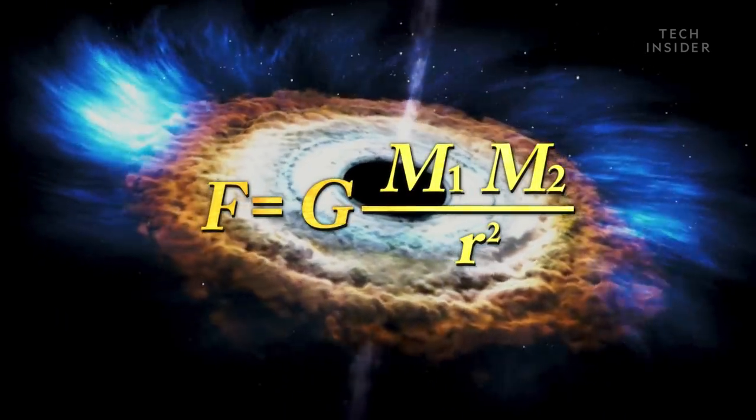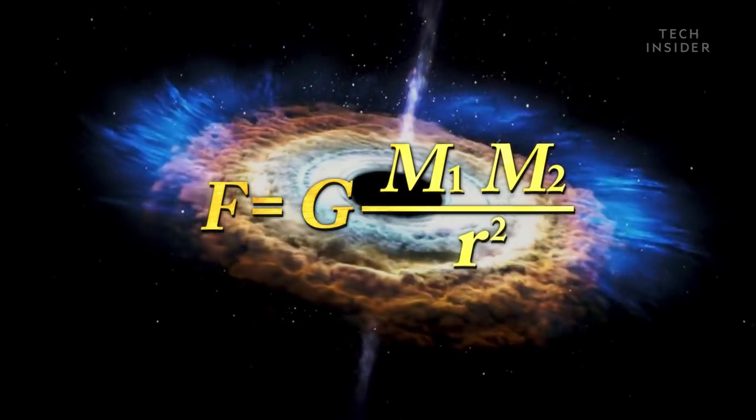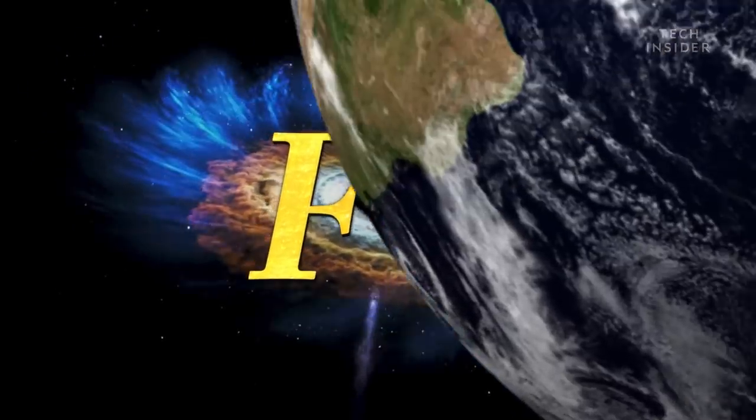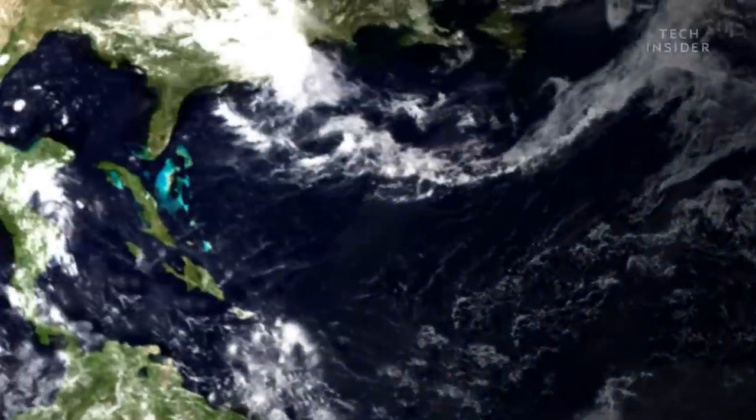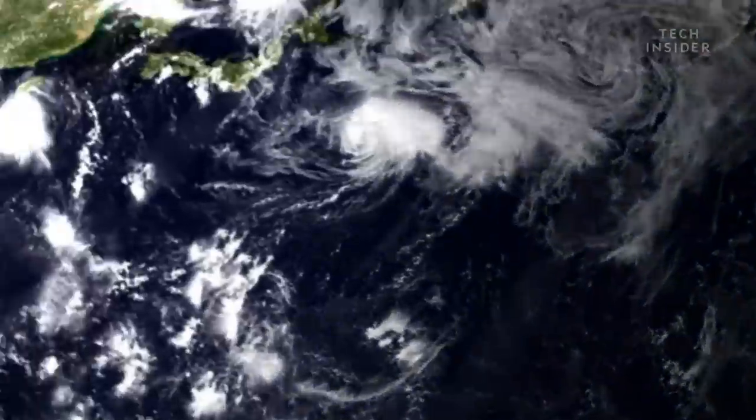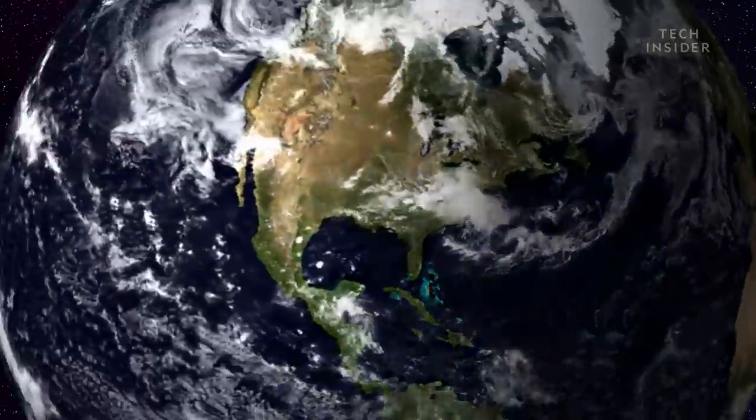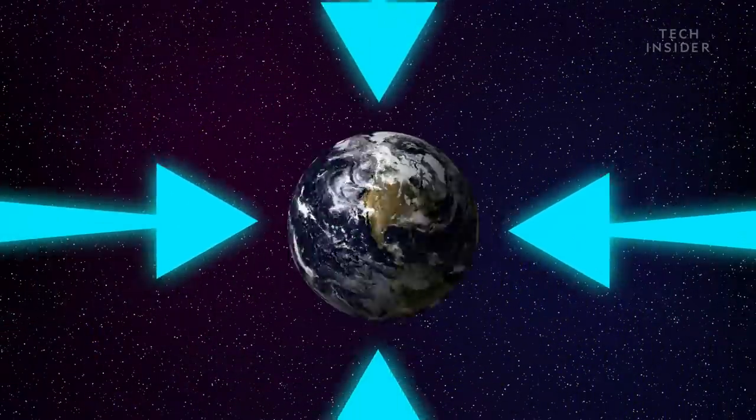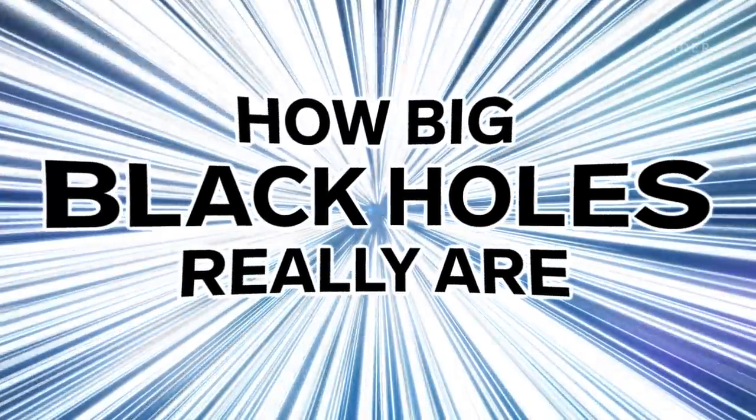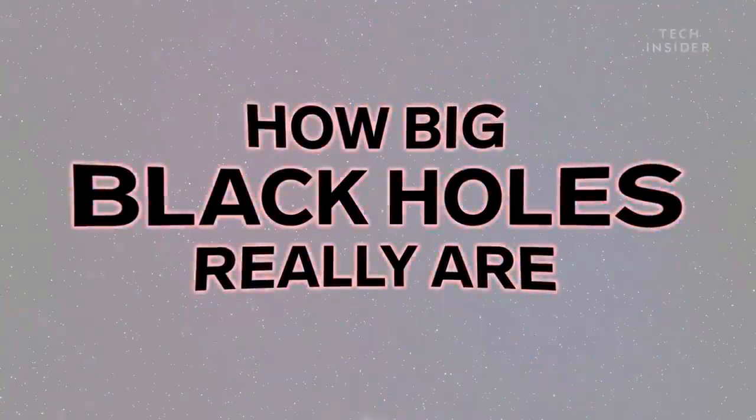Their secret weapon is gravity. You see, the more mass you can shrink into a small space, the stronger your gravitational force will become. To make Earth into a black hole, for instance, you'd have to shrink it to less than an inch across. But real black holes are much larger than that and pack way more mass than Earth. Here's just how big black holes can really get.